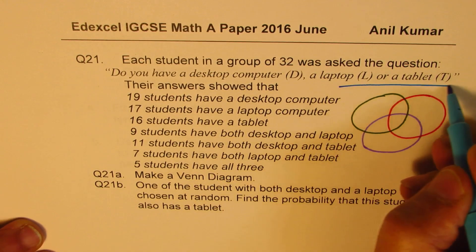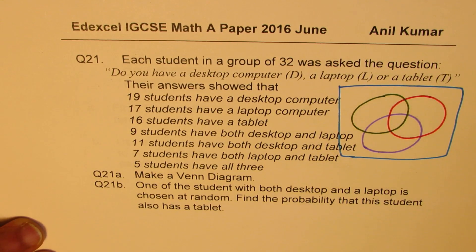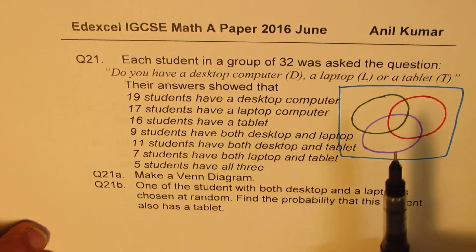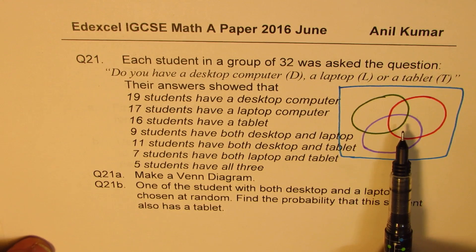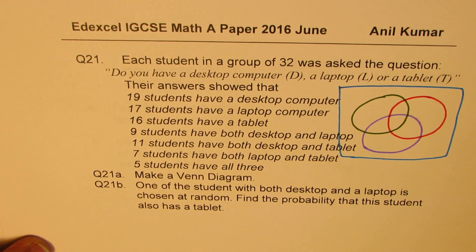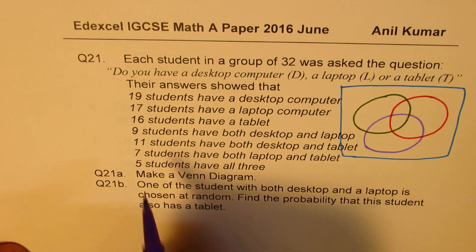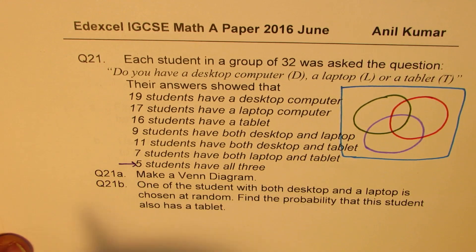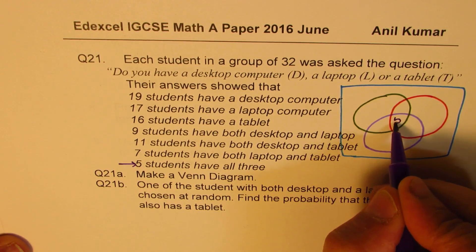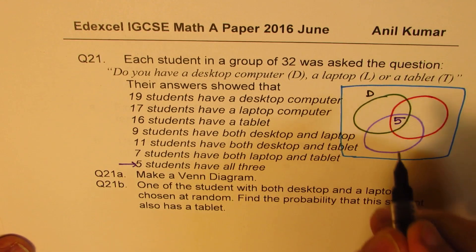Whenever you have to fill in the numbers, you always write from inside out. We'll begin with the inside number — 5 students have all three — so we start with 5 in the central region which includes all three sets.